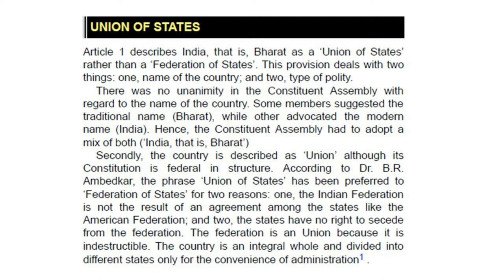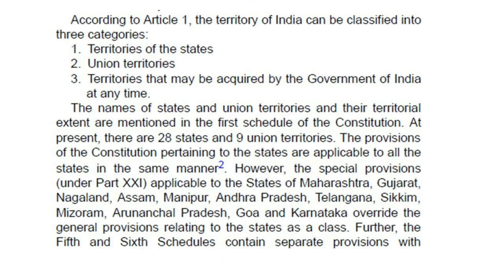The country is an integral whole and divided into different states only for the convenience of administration. According to Article 1, the territory of India can be classified into three categories: territories of the states, union territories, and territories that may be acquired by the government of India at any time. The names of states and union territories are mentioned in the first schedule of the Constitution. At present, there are 28 states and 9 union territories.